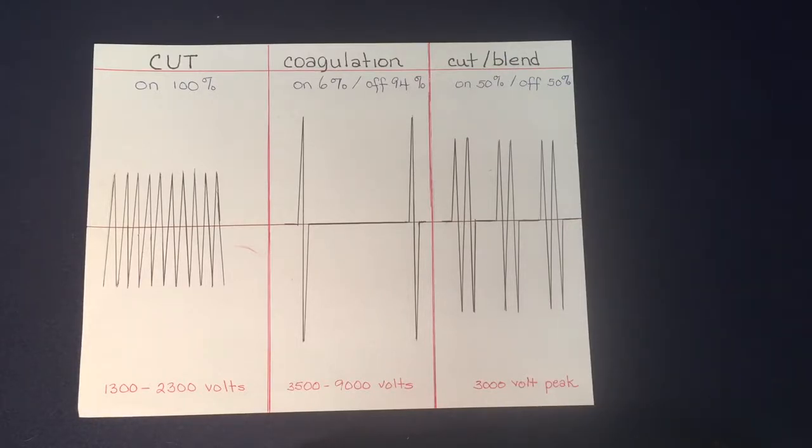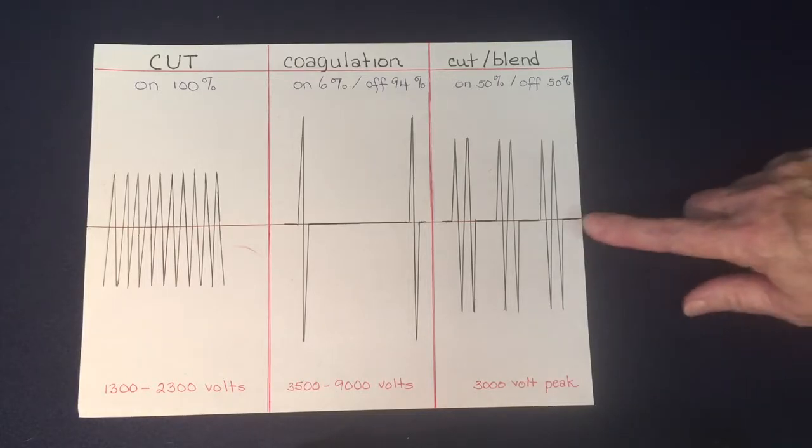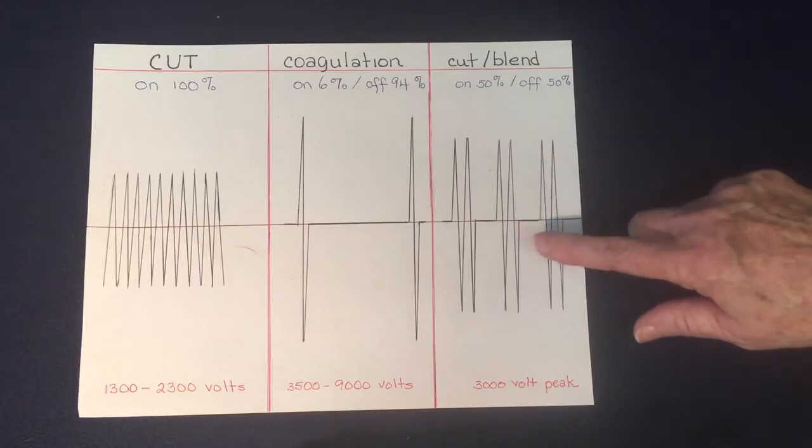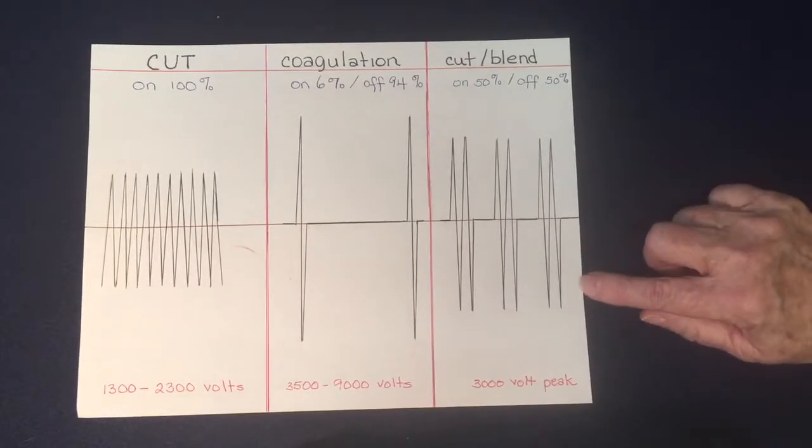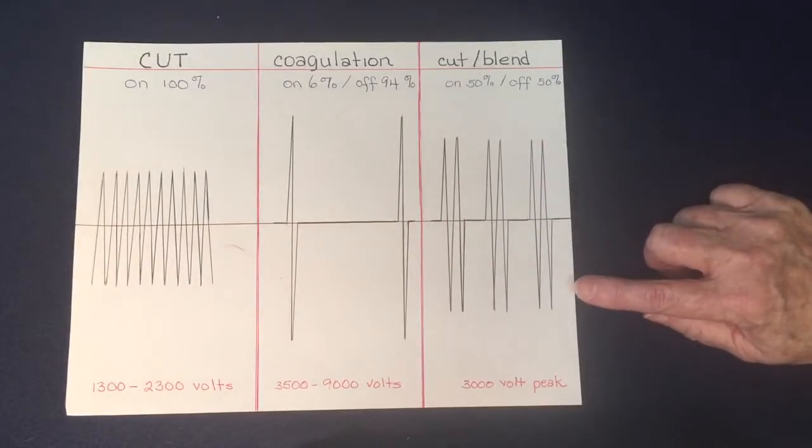The voltage is somewhere in between the cut and the coagulation at a peak voltage of 3000. As you can see, that's going to do a little more adjacent burning but it's also going to stop the bleeding, so if the surgeon is using cut, he's probably going to want you to use a blend.